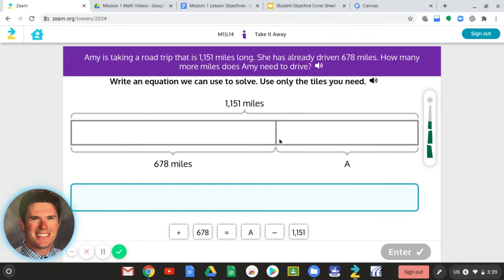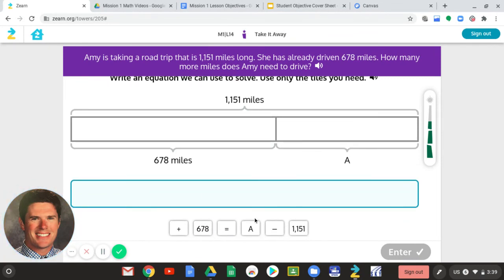So write an equation we can use to solve. Use only the tiles you need. So it's having us use these tiles. If I know the total and I know one of the pieces and I'm trying to figure out the missing piece, what do I have to use? Subtraction. I take my total, 1,151. I subtract the piece I know, which is 678. And that should equal, if I do my equation correctly, my unknown in this case A.